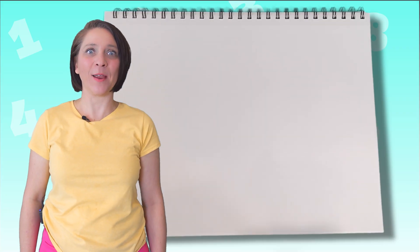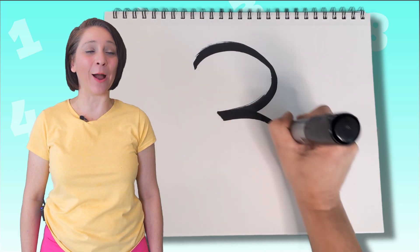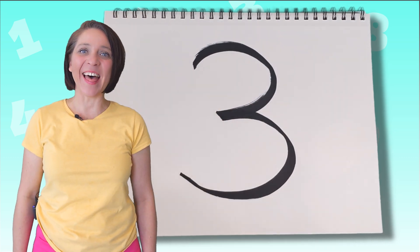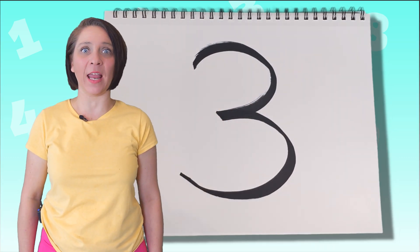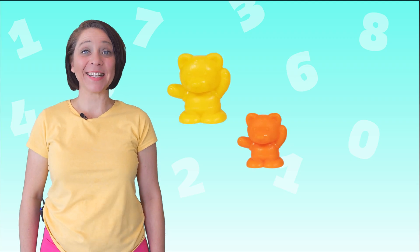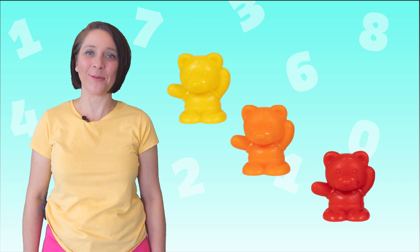Three. Yeah! Let's make a number three. Around the tree, around the tree. That's the way to make a three. Count to three. One, two, three.